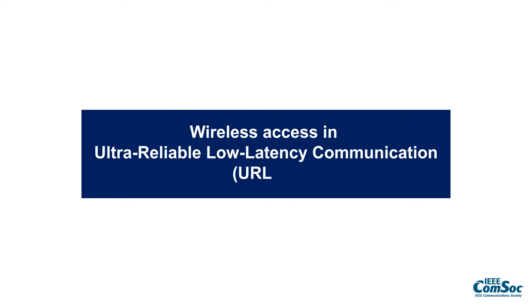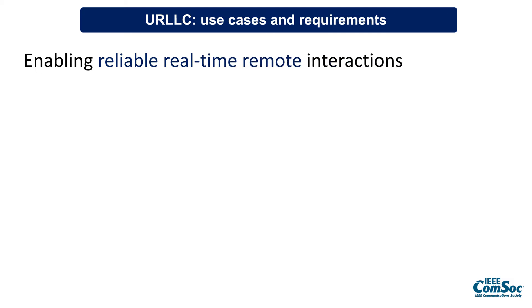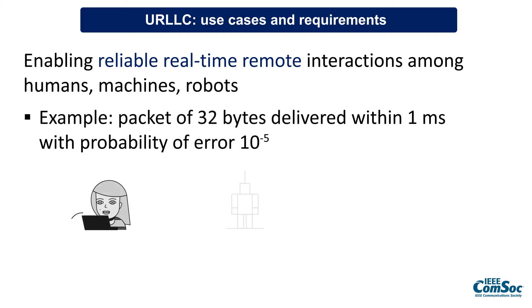This is a preview of the paper Wireless Accessing Ultra-reliable Low-Latency Communication, URLLC. URLLC is about enabling reliable, real-time, remote interactions via wireless connectivity among humans, machines, and robots with very stringent latency and reliability requirements.